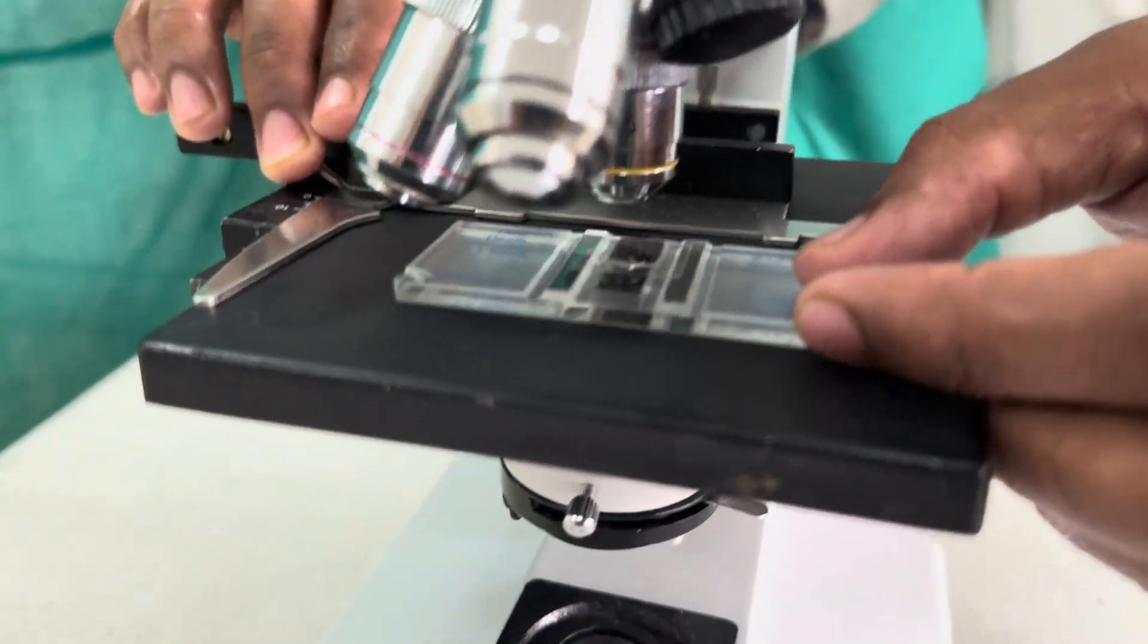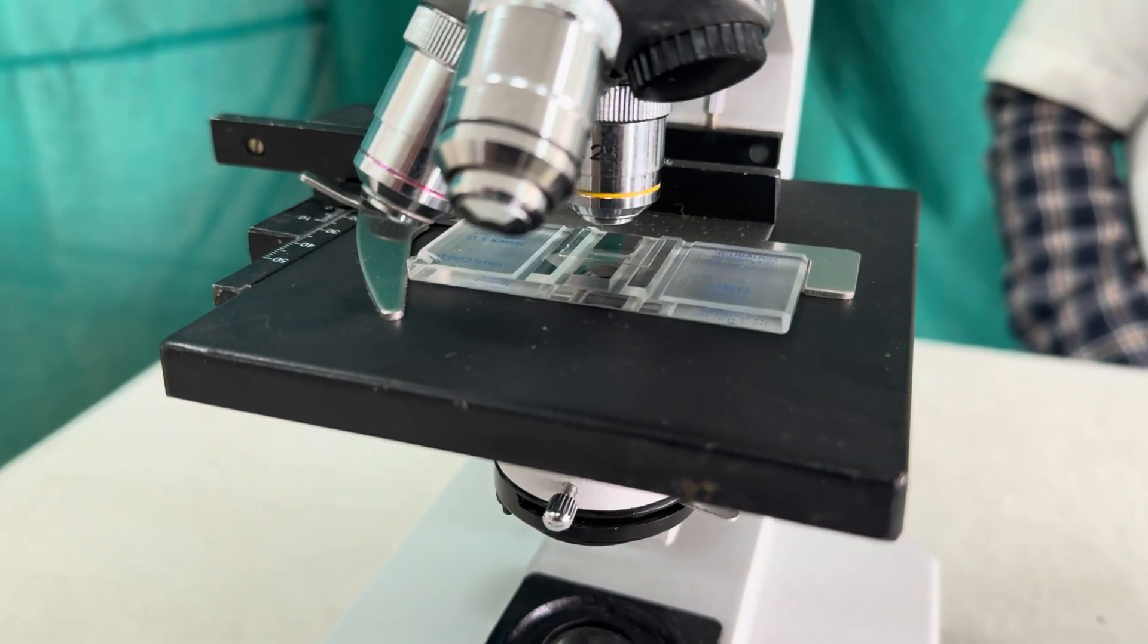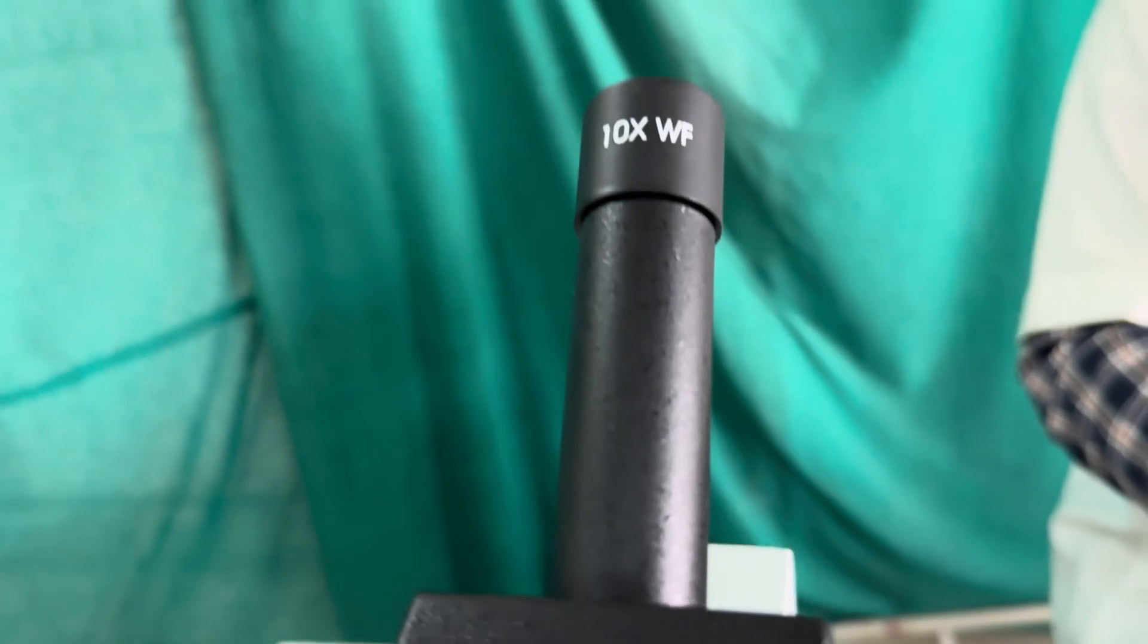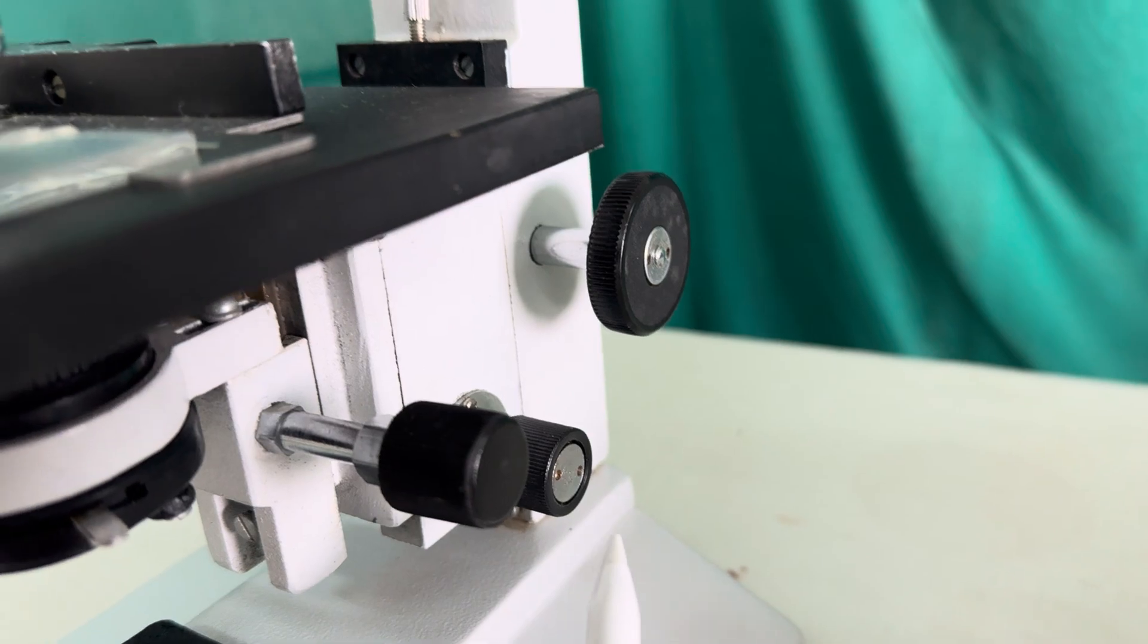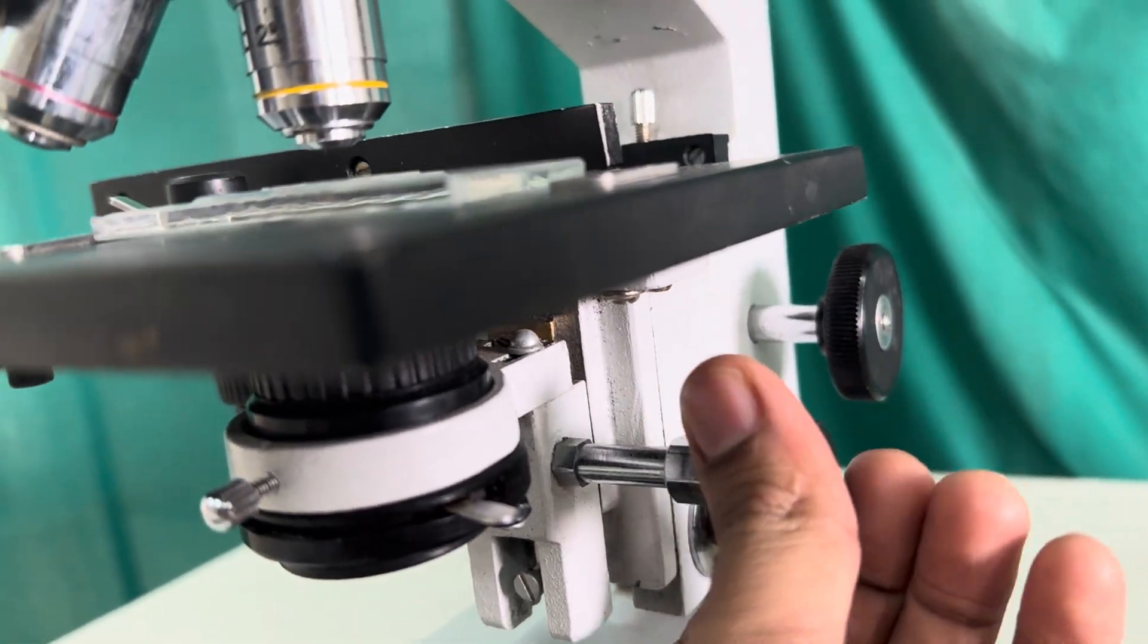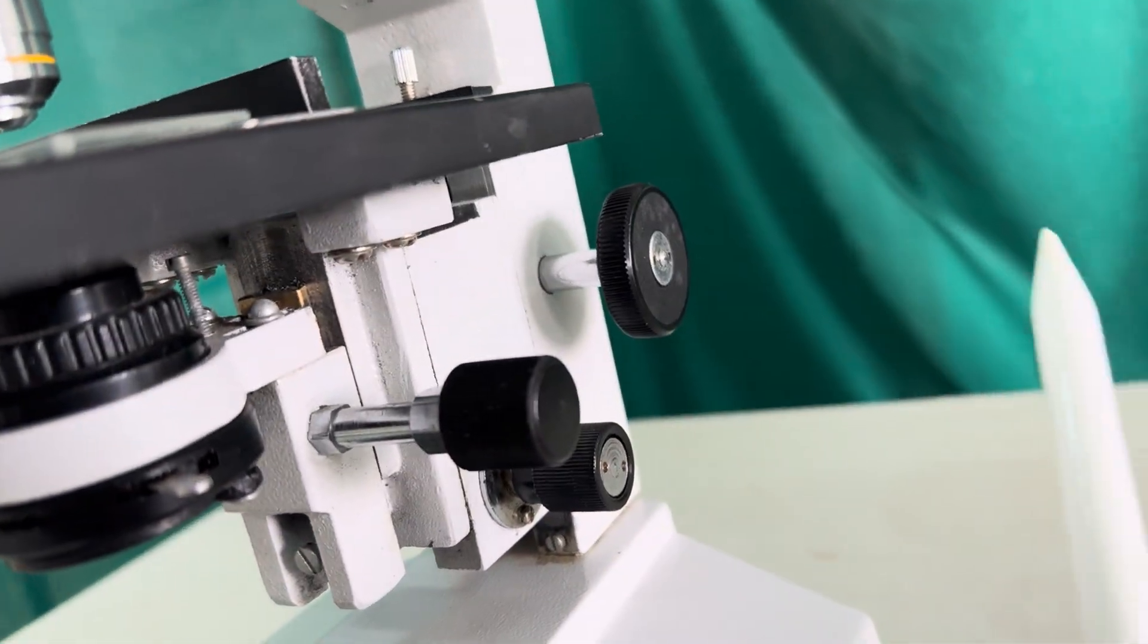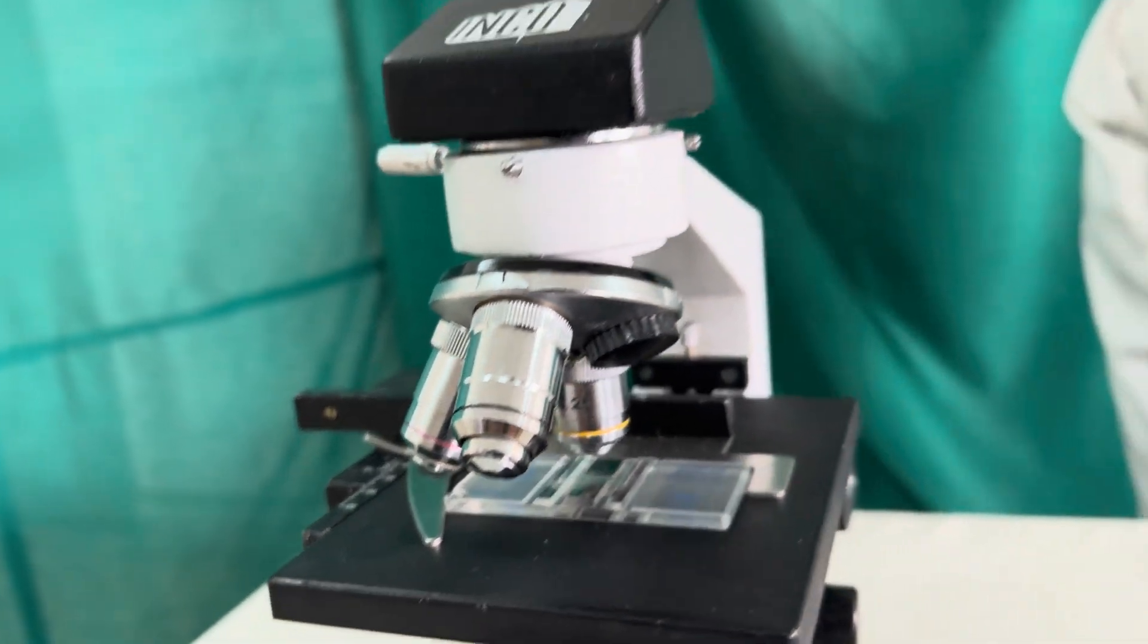On the microscope platform and you have to focus under low power. You know there is a low power, high power and oil immersion objective lens. This is the eyepiece lens. Then there is a coarse adjustment here fine adjustment and there is a condenser here to adjust the intensity of the light. You can use this screw to adjust the height of the condenser then with the help of the coarse adjustment screw and the fine adjustment screw you have to focus it under the low power.